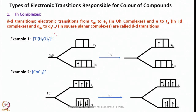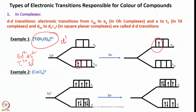A typical example: hexaqua titanium(III), a d1 system. Titanium is 3d²4s², and removing 3 electrons for Ti³⁺ gives a 3d1 system. One electron is placed in T2g and would be promoted to Eg — this is the electronic transition. Also, for tetrachlorocobaltate, a four-coordinate tetrahedral high-spin complex, we have 4 electrons in the E state and 3 electrons in the T2 state, and either electron can be promoted. These are typical examples of d-d transitions.